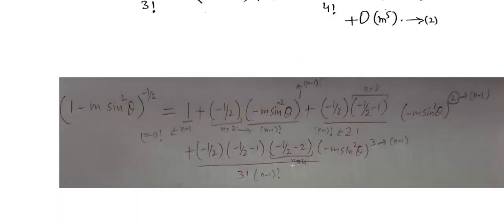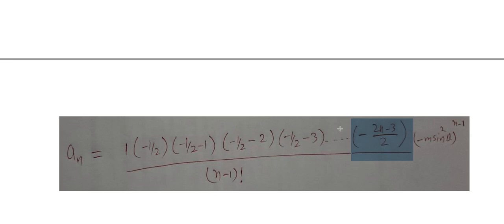There is no confusion remaining: we have seen that the first term for n=1 comes from the simple expansion, and as we increase n the terms continue. Next, we need to obtain the convergence of this series, which we will determine with the help of the ratio test in the next lecture. Thank you very much.